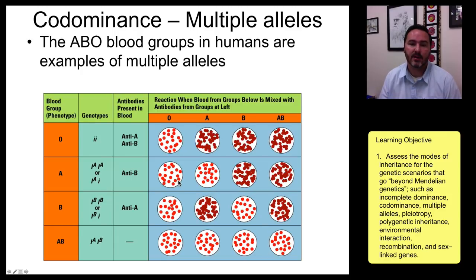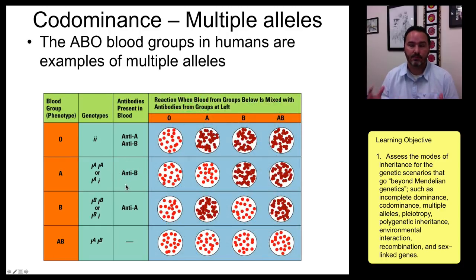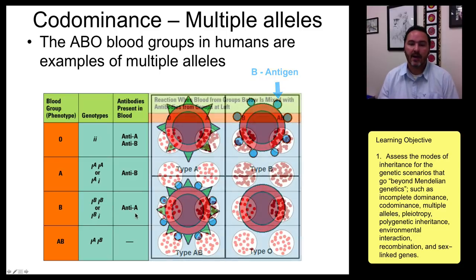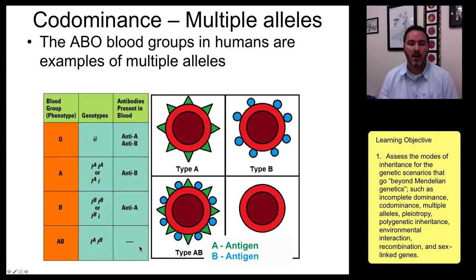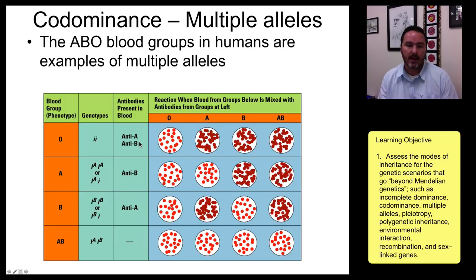Codominance can also be demonstrated by looking at blood groups. If you are blood group type A, you produce type A antigens, so you cannot have anti-A antibodies in the liquid parts of your blood. If you are type B, you produce type B antigens on the outside of the red blood cell, so you cannot have anti-B antibodies, but you can have anti-A. If you are type AB, you produce both antigens and so cannot have any of these antibodies. Type O doesn't produce any antigens, so they can have both anti-A and anti-B in their blood serum.